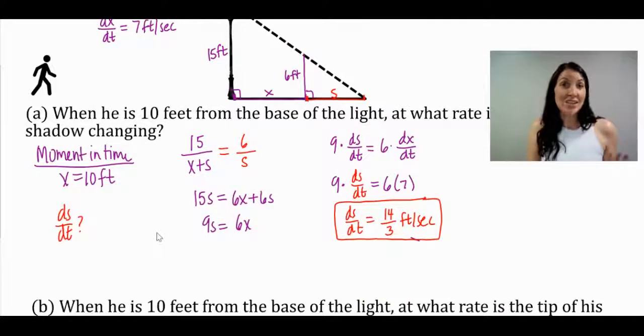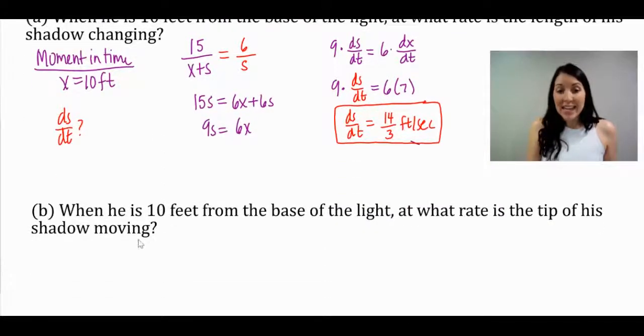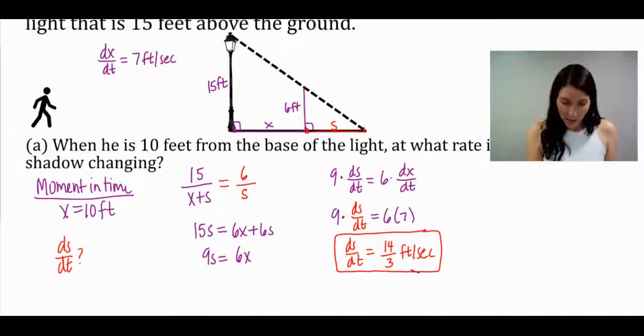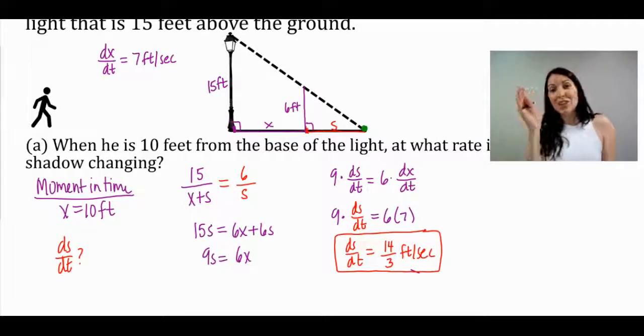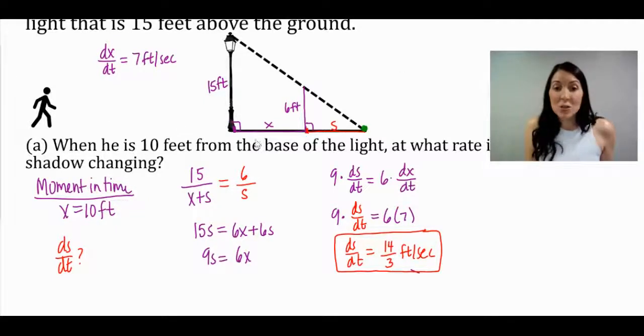Let's look at another question that sometimes shows up with a shadow problem. When he is 10 feet from the base of the light, at what rate is the tip of his shadow moving? This tip right there, at what rate is that tip of the shadow moving away? Well, this problem seems like it would be difficult, but it's actually not too bad. Why? Because we already know the rate that x is changing, that's 7, and we already know the rate that s is changing, that's 14 thirds.